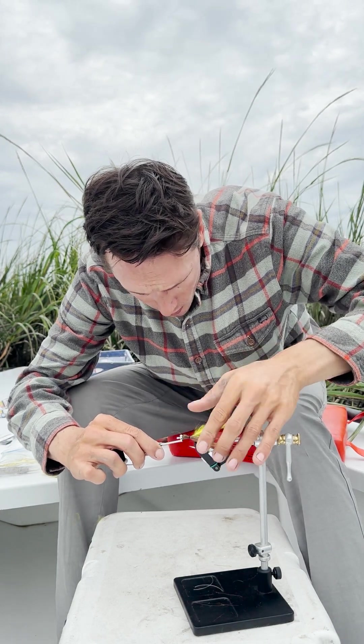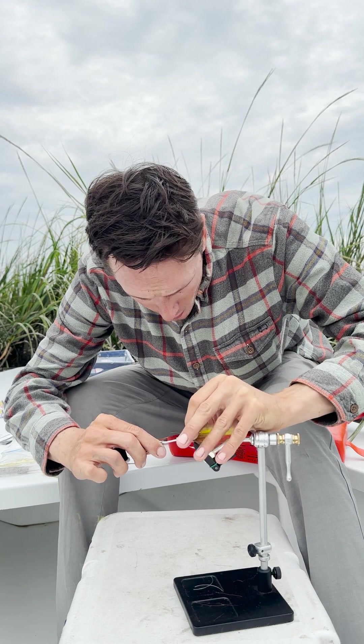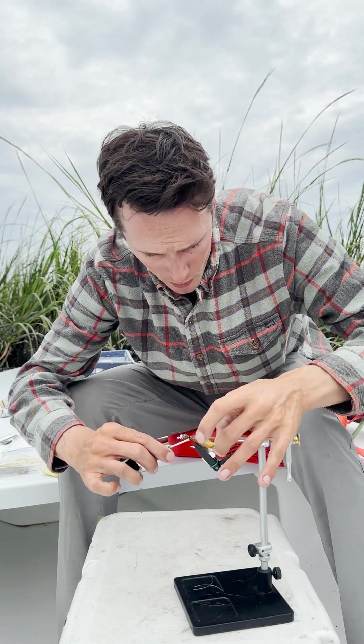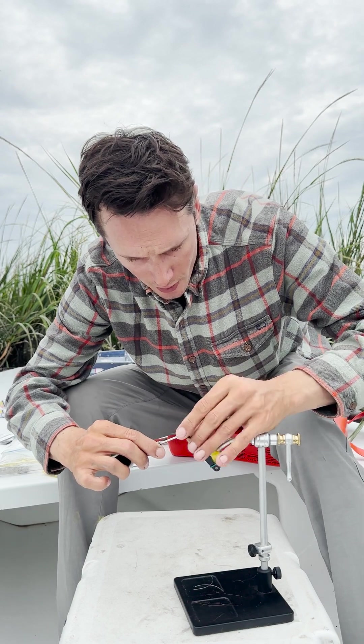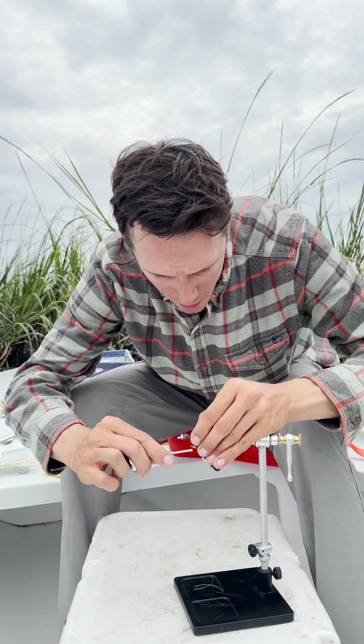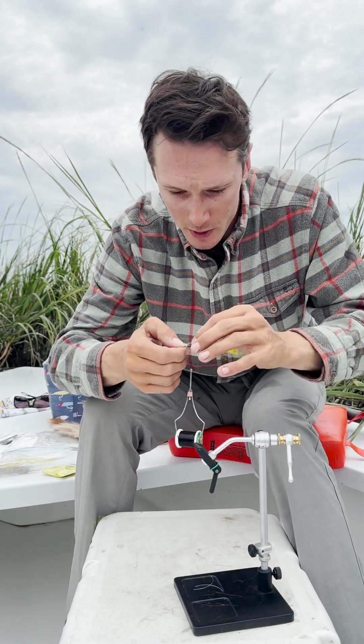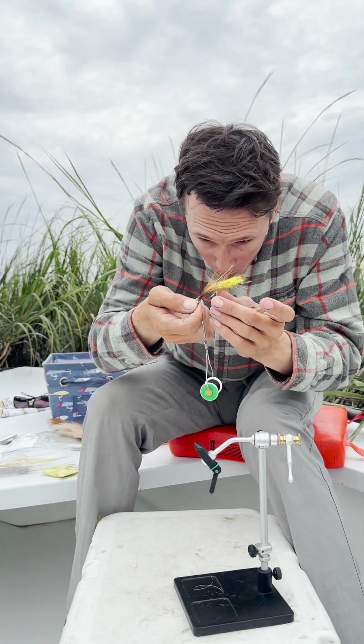So the bucktail obviously moves some water, but it's also, if anyone's ever fished with flies with rabbit strips, they know that the rabbit tends to foul pretty good. So I'll actually take this out of the vise a lot of times, spin it out around there a little bit and make sure that it's evenly distributed around.